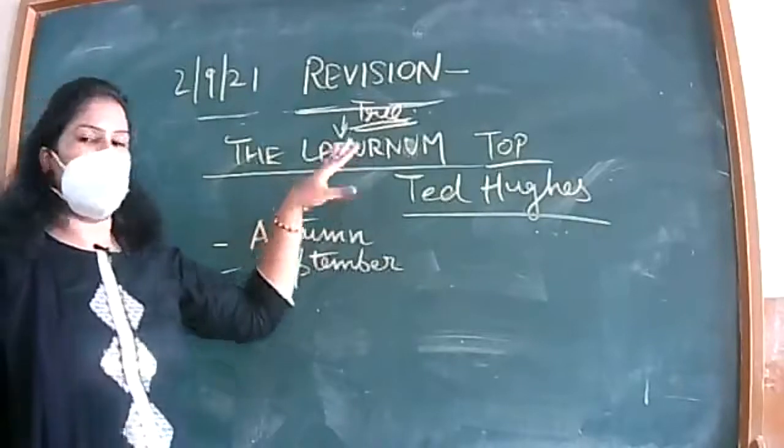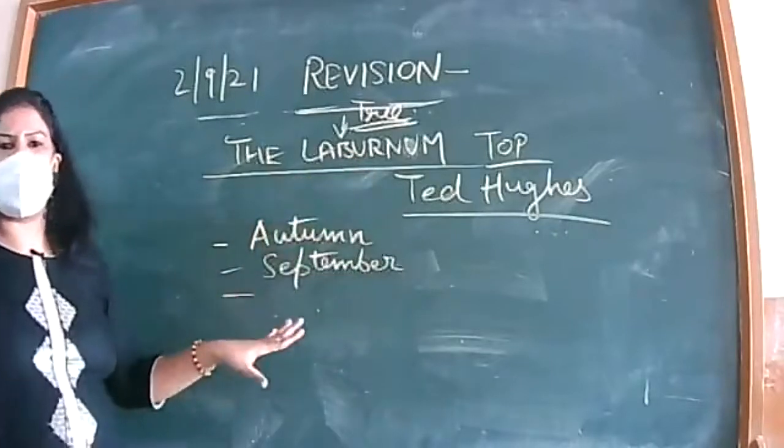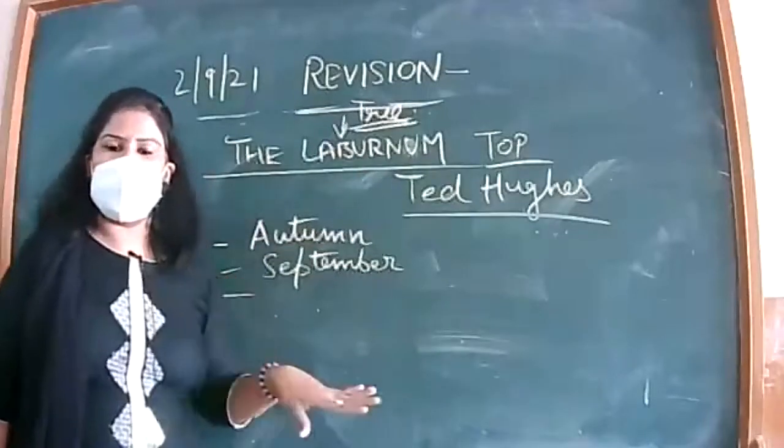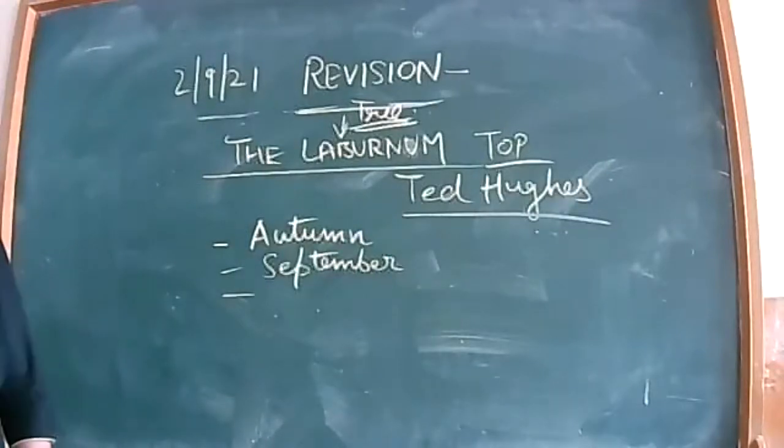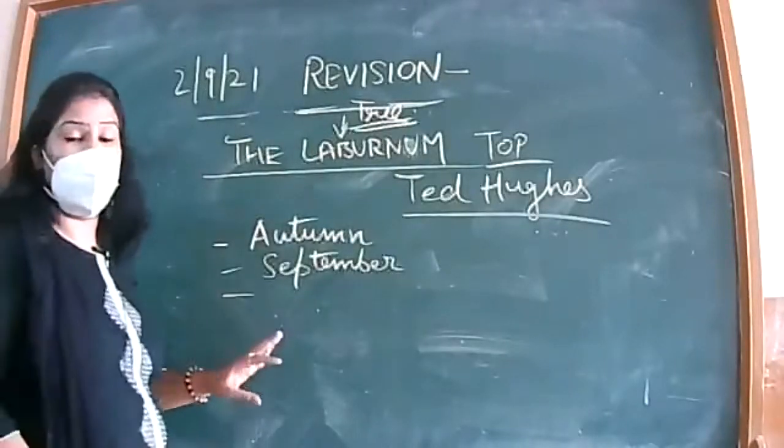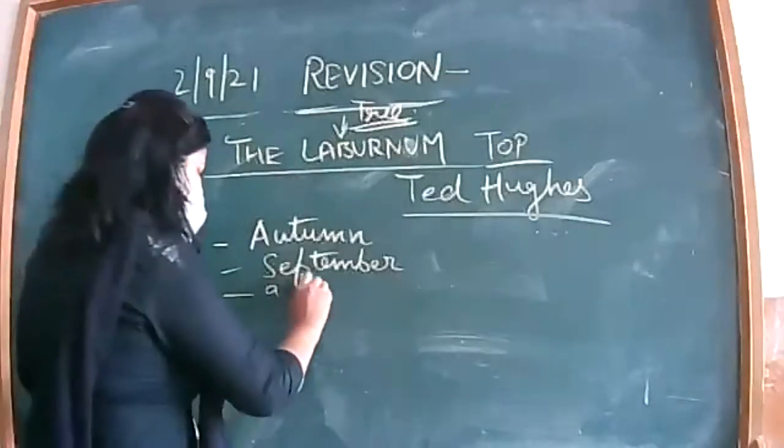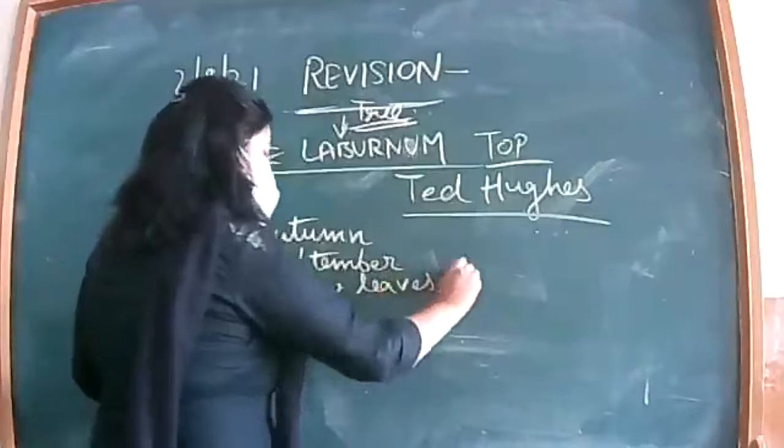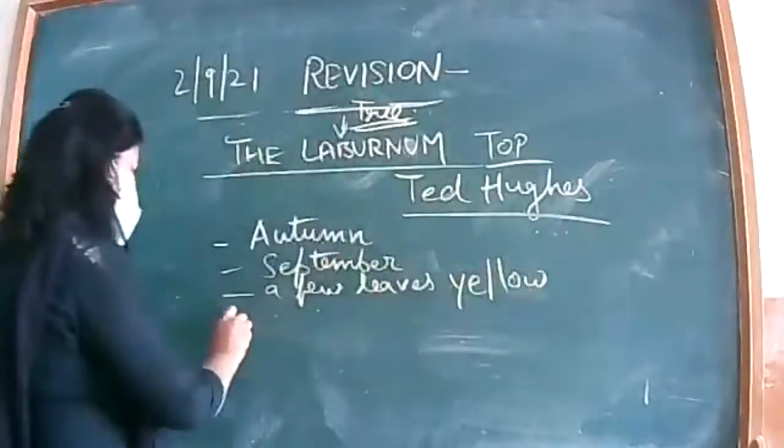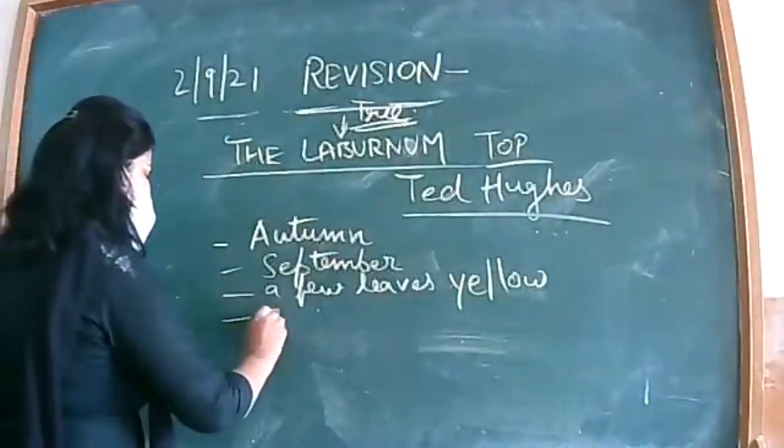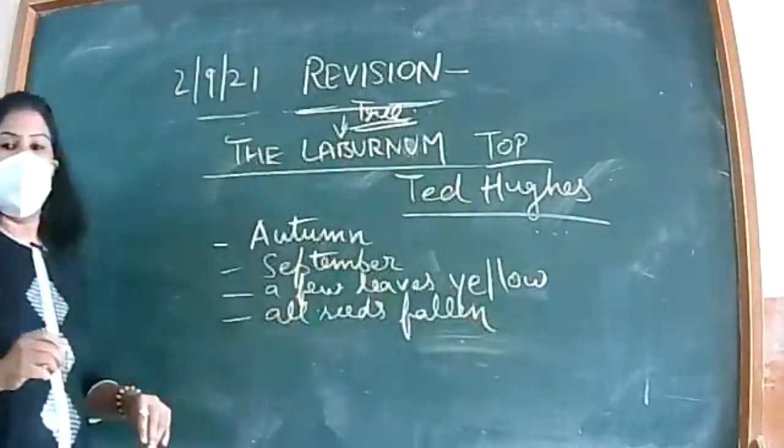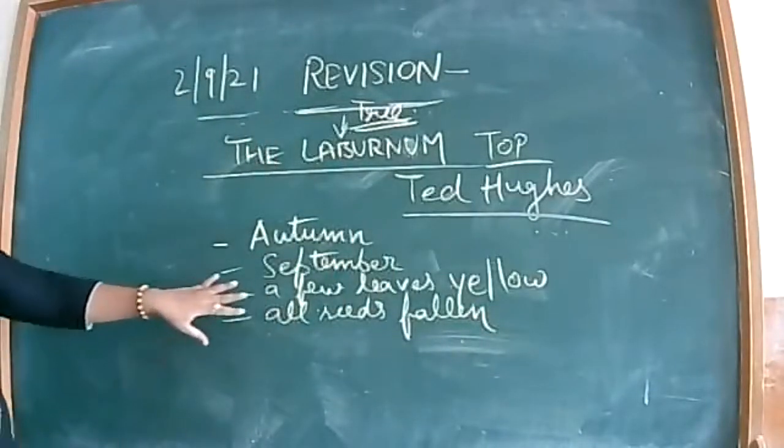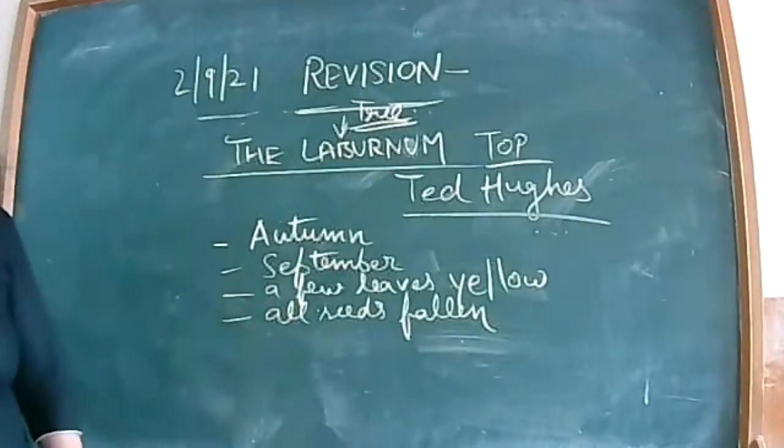So they have mentioned the month - autumn, September, sunlight. So it means broad daylight is there in the month of September. And the highest part of the laburnum tree, the top of the tree, is silent in the weather of autumn, in the month of September. The tree top seems to be silent. So in the beginning of the poem, we get to know that there is silence prevailing at this tree. Then poet says that a few of its leaves are turning yellow, but all of its seeds have fallen.